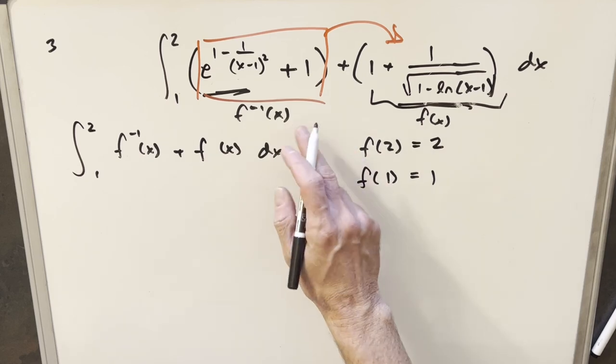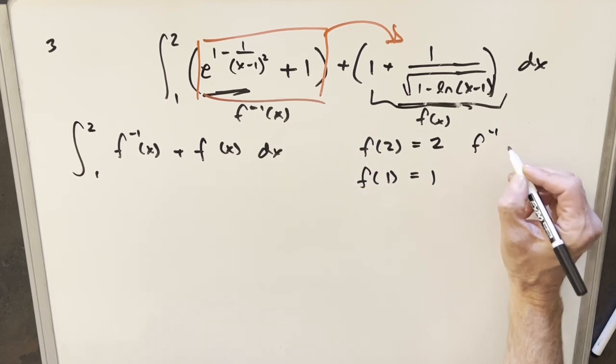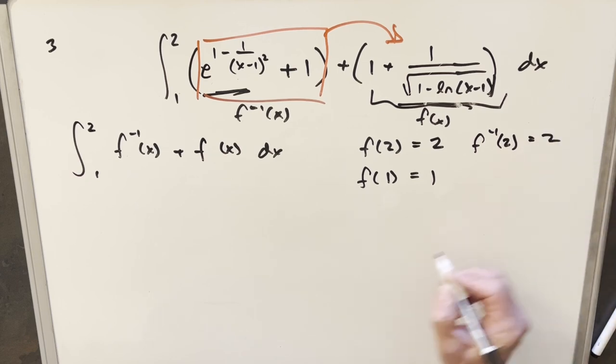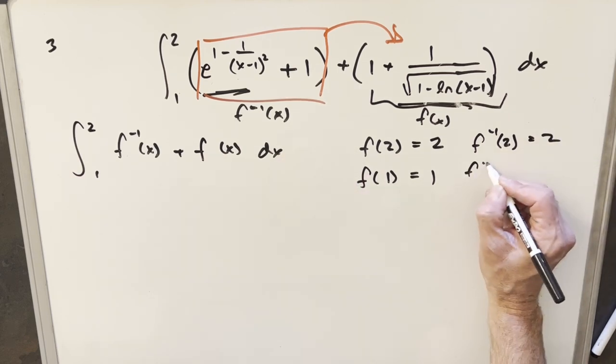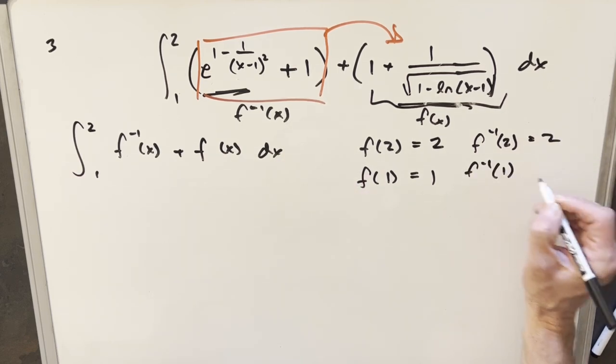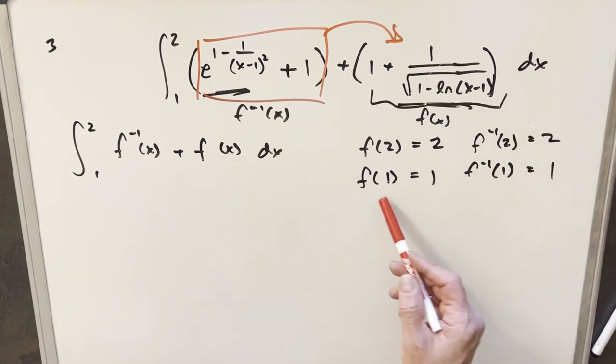And then you can do the exact same thing to evaluate the inverse. But I can tell you that for the inverse at 2, that's also going to be 2. And the inverse at 1, again, we'll need a limit. But that's also going to be 1. And now that we established this over here, I just want to take a look at a graph of these functions.